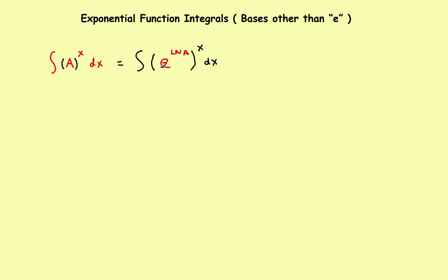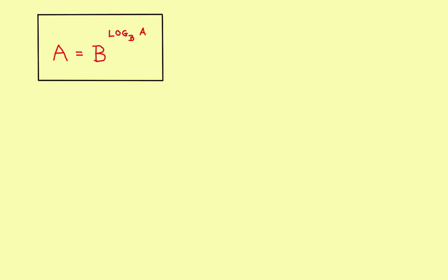Some students are a little confused — where did this come from? Before we go on, let's go back and remind you how to change a base a into a base e. The formula looks like this: if you want to change base a into a base b, the formula says it's the log of a to the base b. This is a formula from back in your log and exponential work.